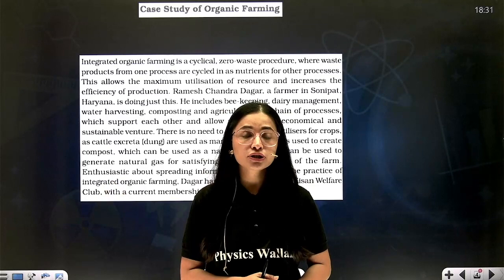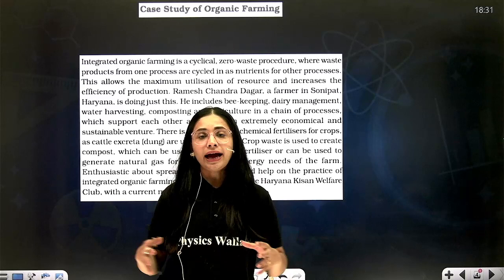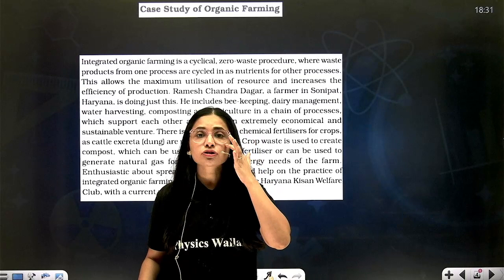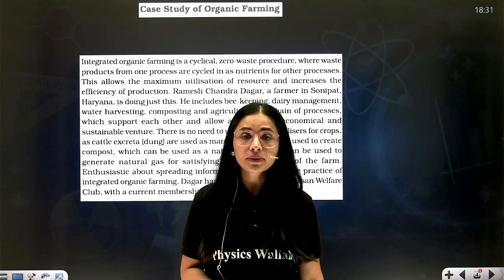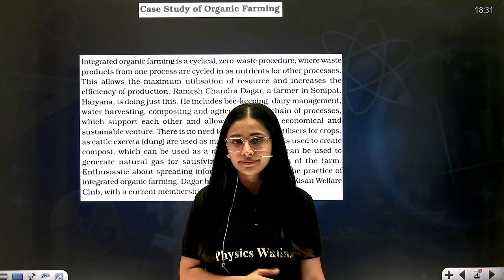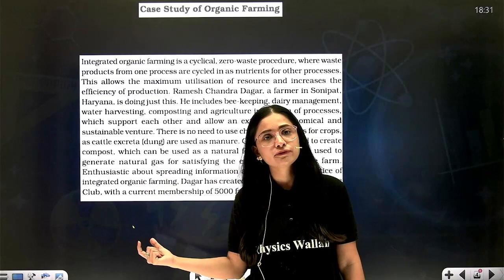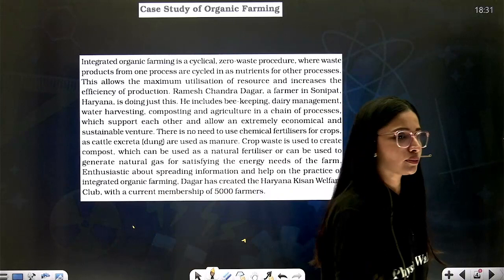This was an inspiration to other farmers. Ramesh Chandra Dagar associated 5000 farmers of Haryana and started his own Kisaan Welfare organization, which is now very famous. Many farmers have joined him and they are proceeding further in the field of organic farming, getting good products from agriculture done in a very good integrated manner. This case study is taken directly from the NCERT book — read it once and it will be done.